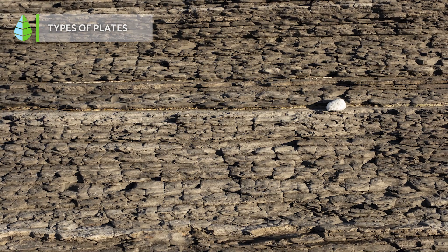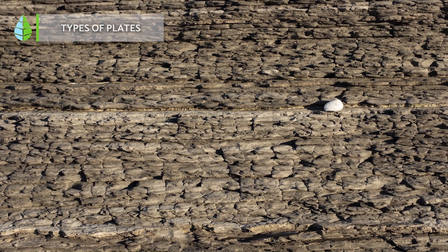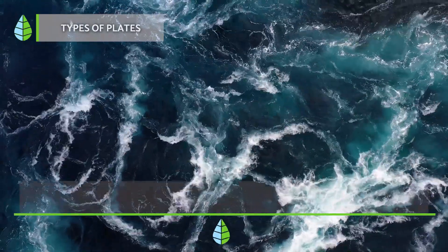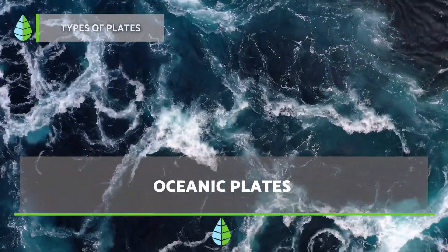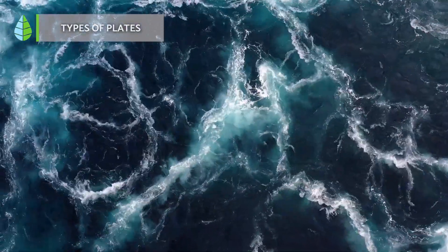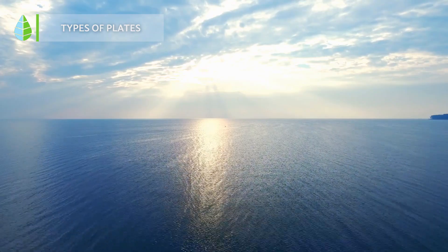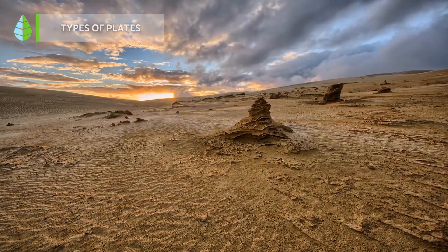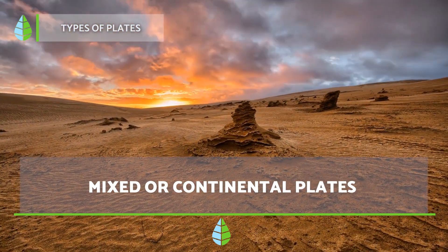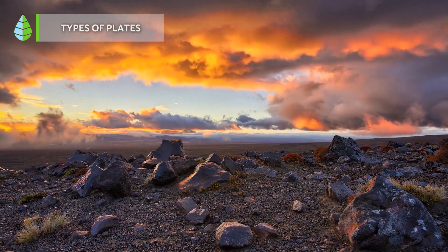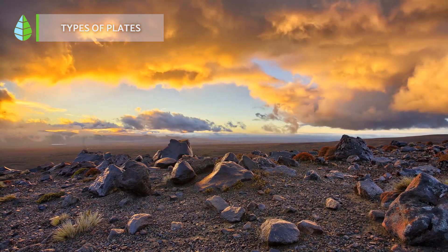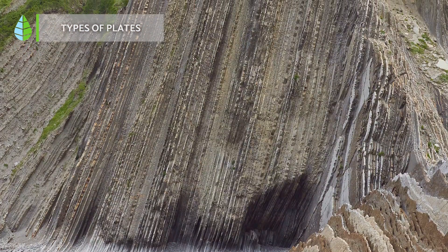Types of plates: based on the type of Earth's crust that forms them, tectonic plates can be oceanic or mixed. Oceanic plates are composed of oceanic crust, which is thin and primarily made up of basic composition with higher proportions of iron and magnesium, and is generally submerged in the water of the oceans in its entirety. On the other hand, mixed plates are mainly composed of continental crust and, to a lesser extent, oceanic crust. As continental crust predominates in their composition, some refer to them as continental plates, and most tectonic plates are of this type.